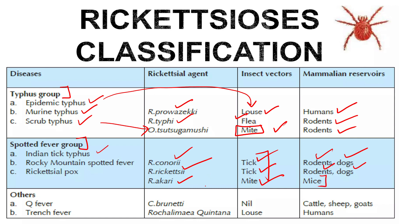Other types of Rickettsia include Q fever, caused by Coxiella burnetii, which has no insect vector but has mammalian reservoirs — cattle, sheep, and goats. Trench fever is caused by Rochalimaea quintana, with the louse as vector and humans as the mammalian reservoir.